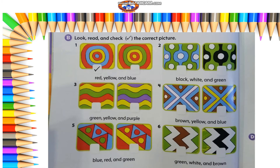Now open Oxford book page 28. Look, read and check the correct picture. I need you to tell me which picture is the correct one — the left or the right one? Number one: we have the colors red, yellow and blue. Yes, it's the left one. Number two: we have the colors black, white and green. Excellent, it's the right picture.